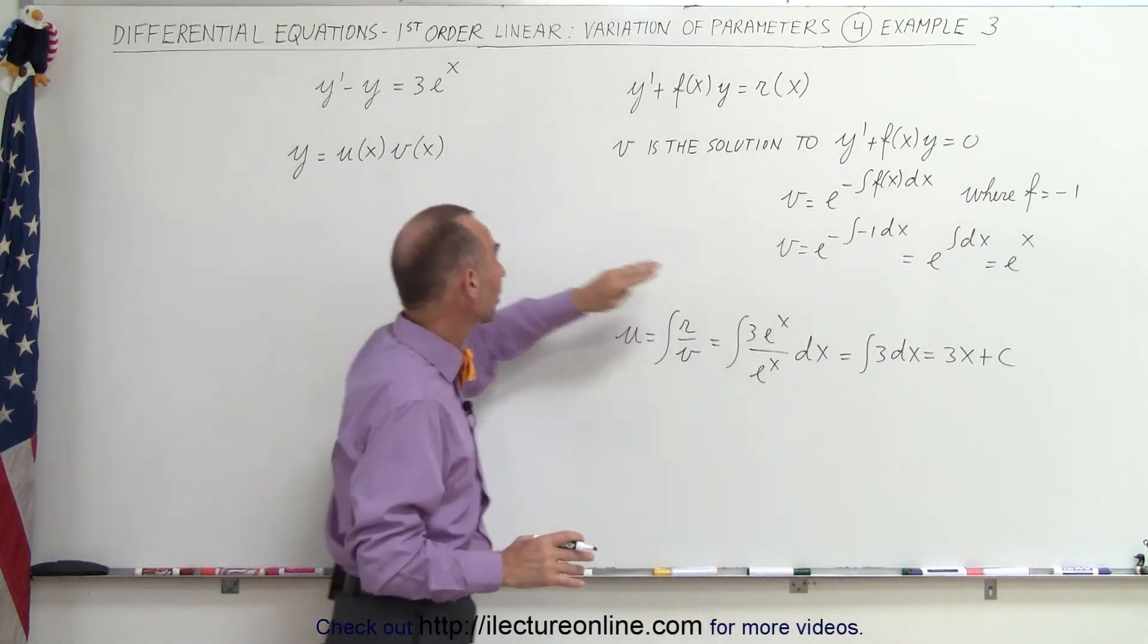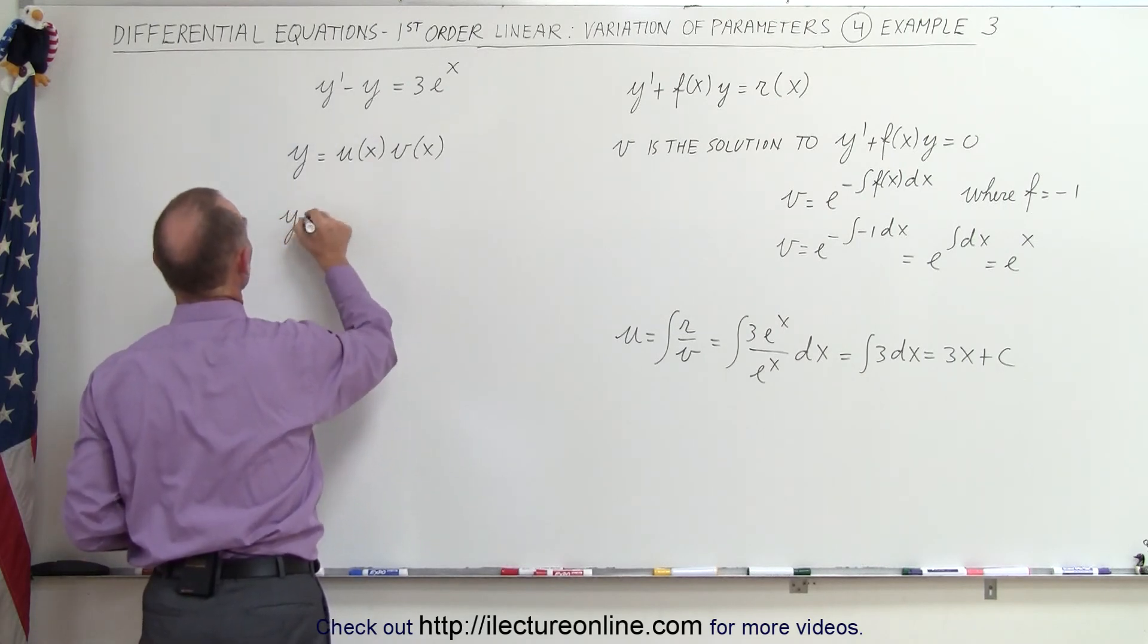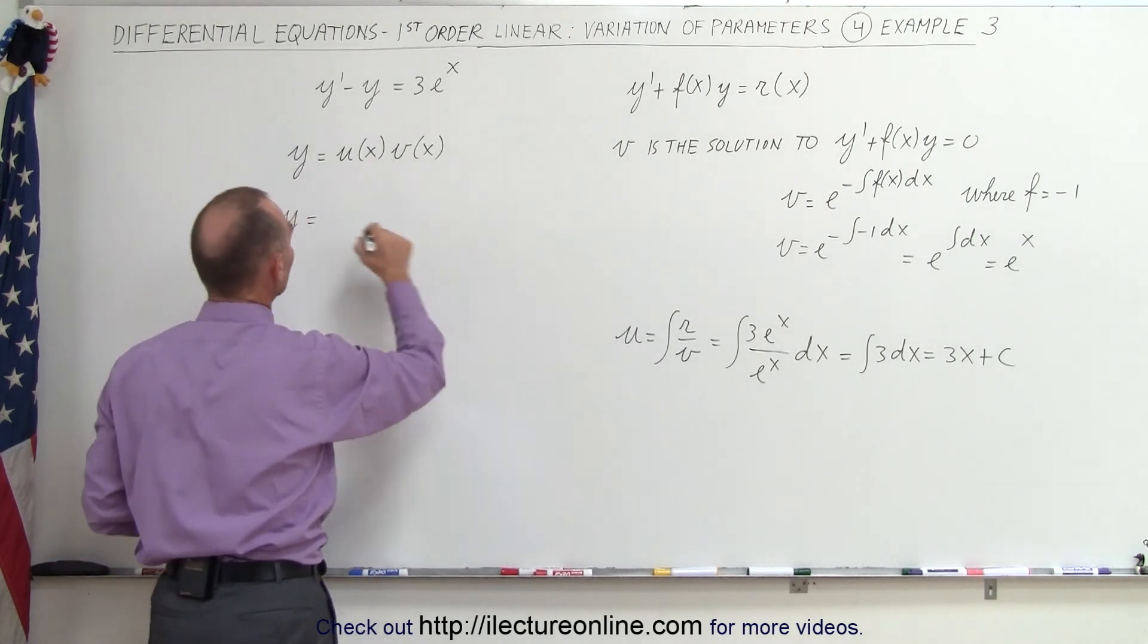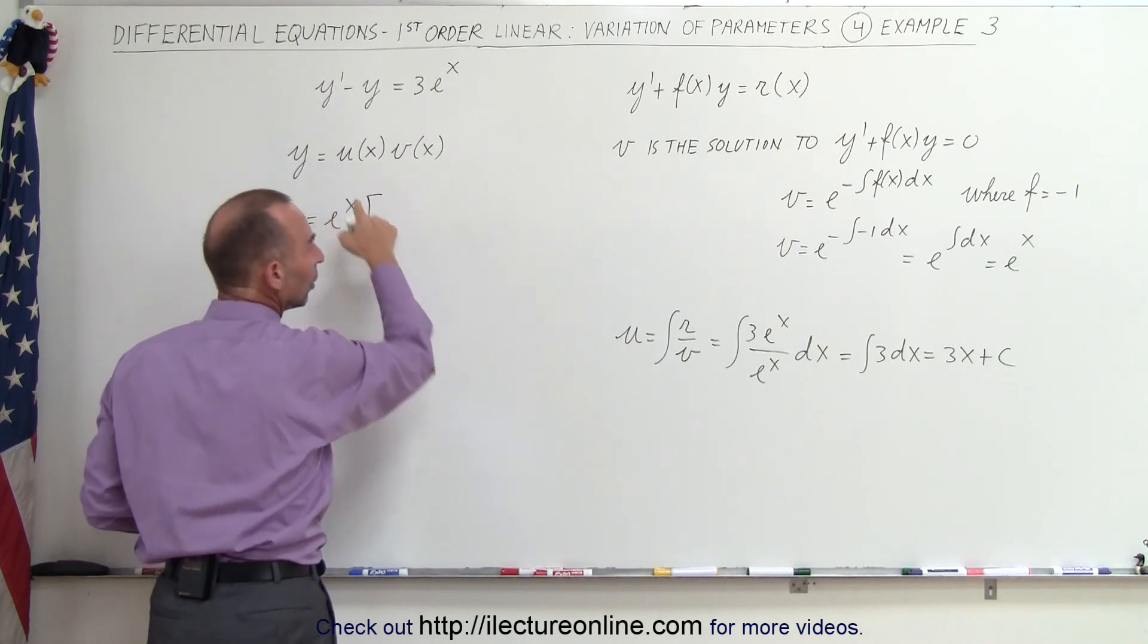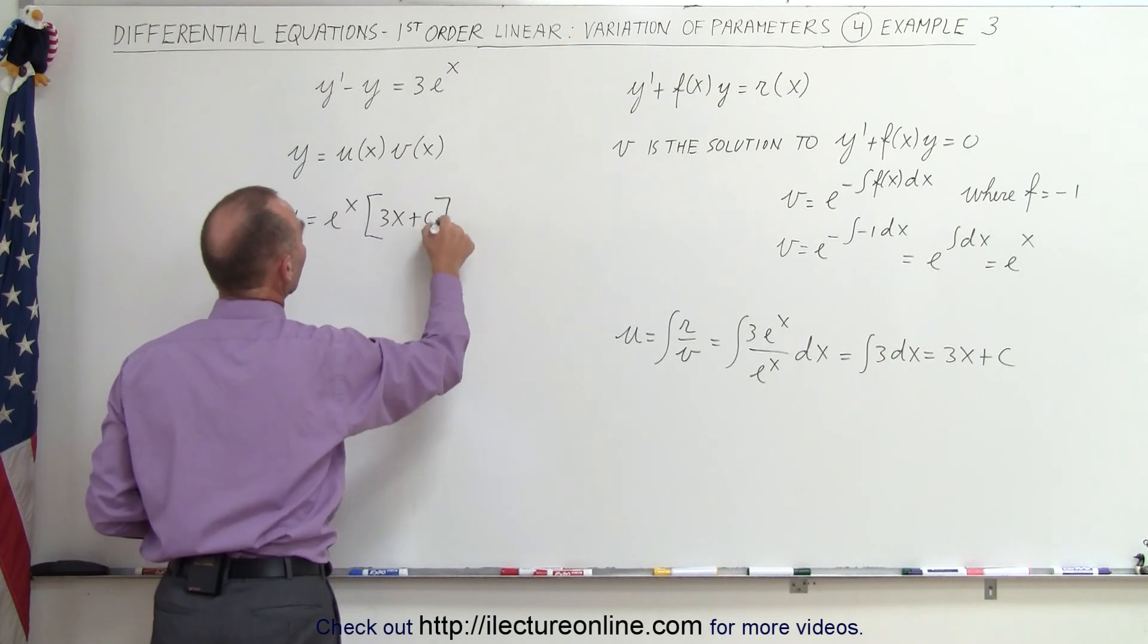We found v, we then plug that back in. We're going to rearrange the term, so y is equal to v, which in this case is e to the x, times u, which in this case is 3x plus a constant of integration.